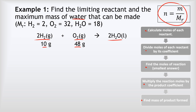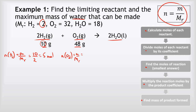Starting by calculating moles of each reactant: the number of moles of H2 equals mass over Mr, which is 10 divided by 2, giving five moles of hydrogen. For oxygen, moles of O2 equals 48 divided by 32, which gives 1.5 moles of O2.